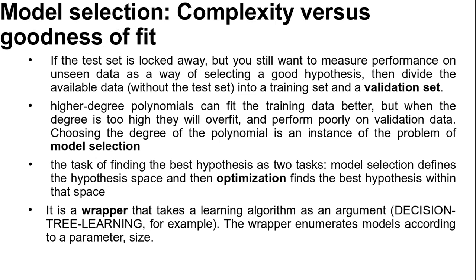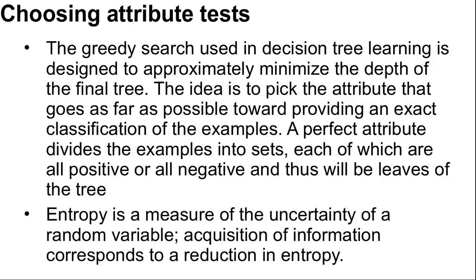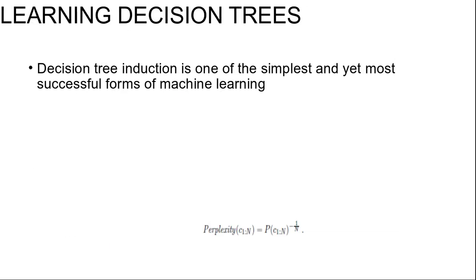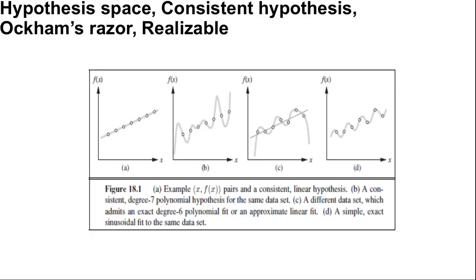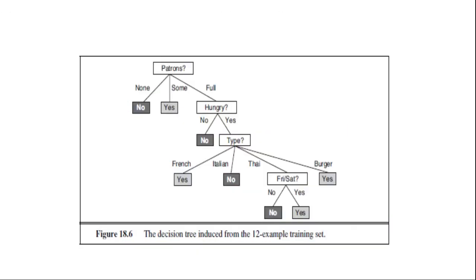This brings us to model selection: complexity versus goodness of fit. We already know that higher-degree polynomials can fit the training data better, but when the degree is too high, they overfit and perform poorly on validation data. Choosing the degree of a polynomial is an instance of the problem of model selection, and you can think of the task as finding the best hypothesis.